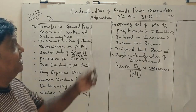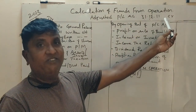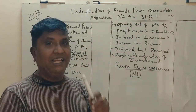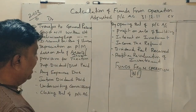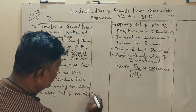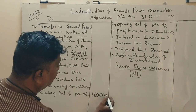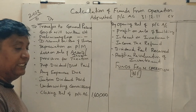This is the end of the year, 31st December 2011. Therefore, 1,60,000 rupees — closing balance of profit and loss account.